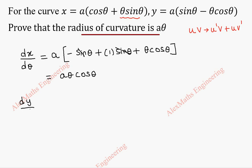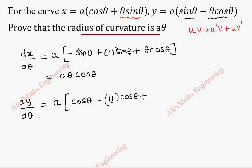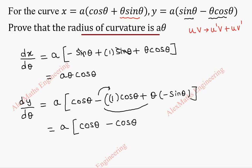Now, dy by d theta is a into: sin theta differentiation is cos theta. Then we have a product of two terms — take minus, open bracket. So u differentiation is 1 into cos theta as it is, plus u is written as it is and differentiation of cos theta is minus sin theta. We take this minus inside, so a into cos theta minus cos theta. When we multiply this minus, it becomes plus theta sin theta. After cancelling, we get a theta sin theta.